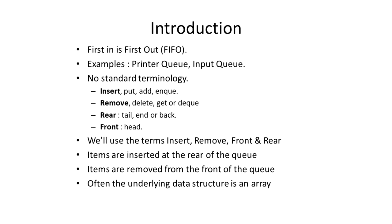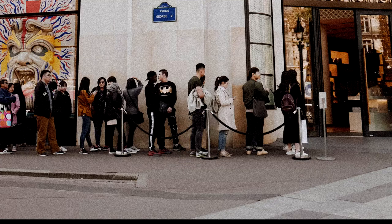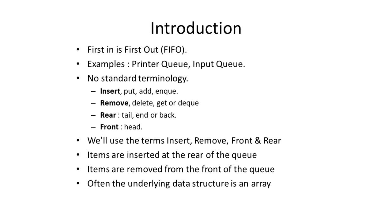To introduce the queue, we're attempting to model the behavior of a normal queue like we would queue up to get a bus ticket, or queue up to get into a concert or a venue. We're modeling that behavior where a person or item joins the queue from the back, and then the first person in line is served or removed. We refer to this principle as first in first out, or FIFO, meaning that the first person in the queue is the first one to exit.